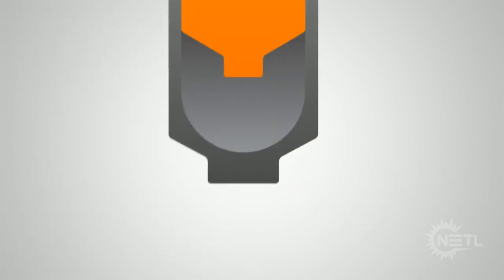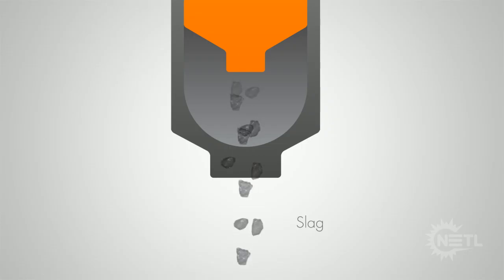Due to the high temperature inside the gasifier, slag is made instead of ash. Slag is like small rocks, and contaminants remain safely trapped inside, so slag can be used to make roads.